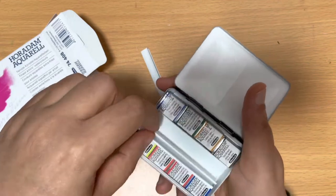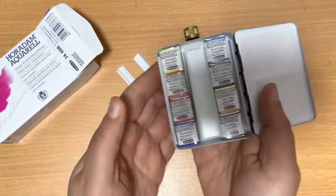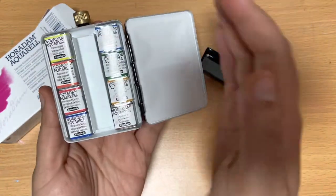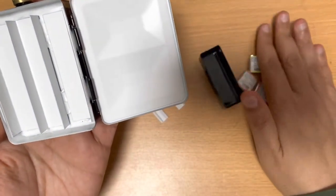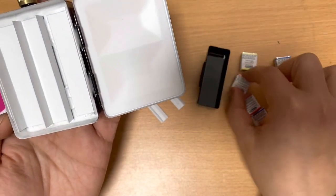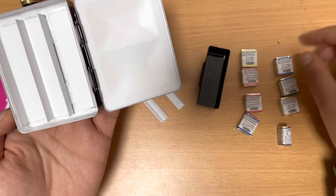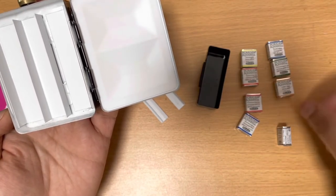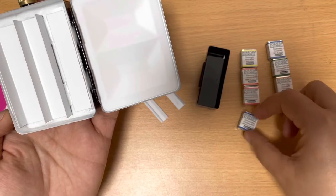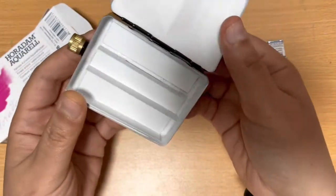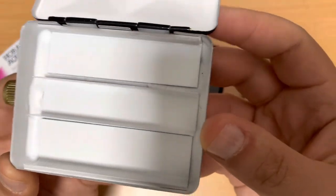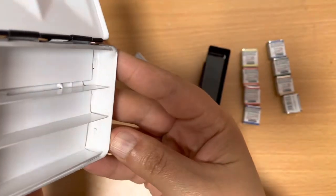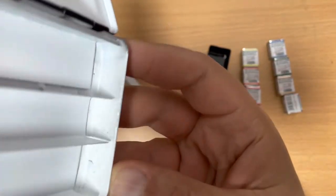I was also hoping that the lid to the water tank would maybe have a chain connecting it to the palette, so when you open it, it doesn't jump off your hands or you end up losing it. You'll see later in the video I was opening it and it just flew over. Luckily there was a bag with stuff just below my desk and it landed there, so I found it.